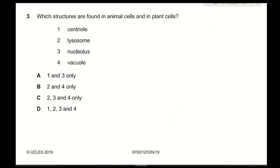Question 3: Which structures are found in both animal cells and plant cells? Centrioles are only found in animal cells, so that is incorrect. Lysosomes — yes, both animal and plant cells have lysosomes containing hydrolytic enzymes, so that is correct. Nucleolus — yes, both animal and plant cells are eukaryotic, so they contain a nucleolus. Vacuole — animal cells contain temporary small vacuoles, while plant cells contain a large permanent vacuole. So all three are correct and the answer is C.